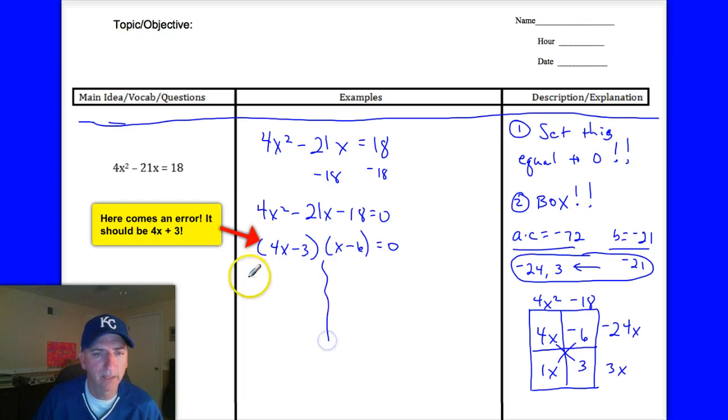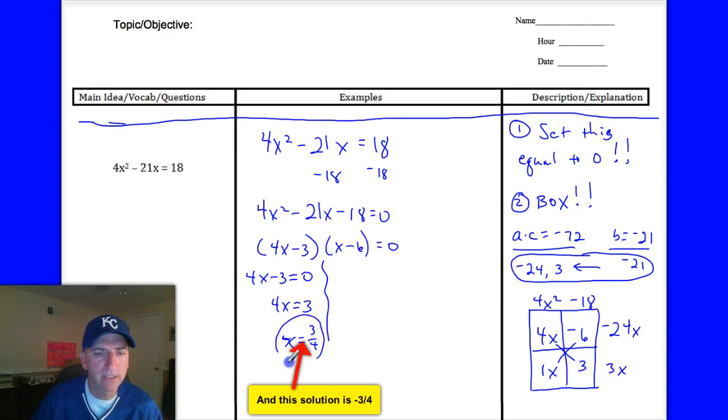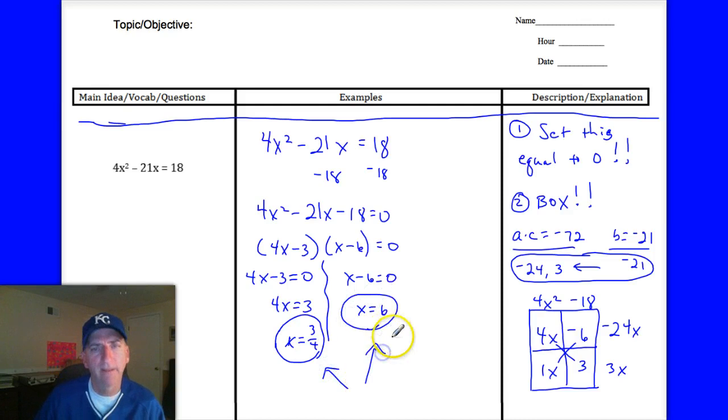And we can solve it by making the 0 product property. 4x minus 3 is equal to 0. Add 3 to both sides. Divide by 4. Sorry about that. That x is supposed to equal 3 fourths. Again, much easier than trying to graph that. And this one, x minus 6 is 0. Add 6, you get x equals 6. So those are the solutions: 3 fourths and 6.